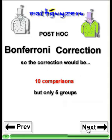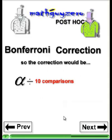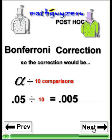So our Bonferroni error correction would be: take the original alpha divided by the number of comparisons. The original alpha is 0.05 divided by 10, so your new critical alpha is 0.005. You would not be able to reject the null hypothesis unless your test statistic generated a p-value of less than 0.005. That's a big difference, and that's your new critical alpha.